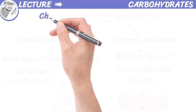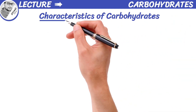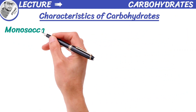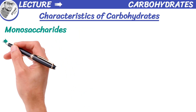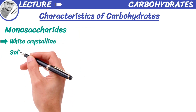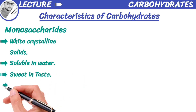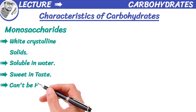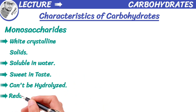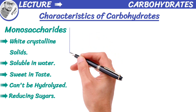Now we are going to discuss the different characteristics of carbohydrates. Monosaccharides are white crystalline solids. They are soluble in water and have a sweet taste. They cannot be hydrolyzed and are reducing in nature, therefore they are called reducing sugars.